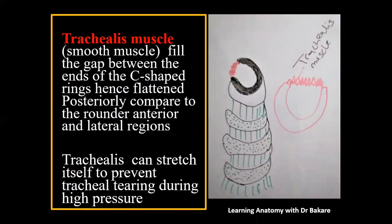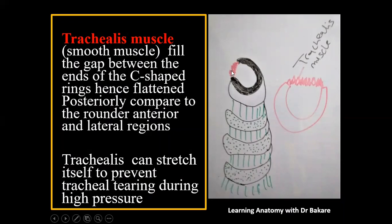The third structure is the trachealis muscle. Since the C-ring cartilages are deficient at the posterior end, air would leak out if that gap were not covered. The trachealis muscle fills the gap between the open ends of the cartilages at the posterior region of the trachea. Because it is smooth muscle, it allows stretching, and during increased intratracheal pressure it permits expansion to accommodate that pressure.